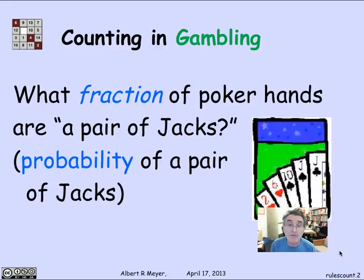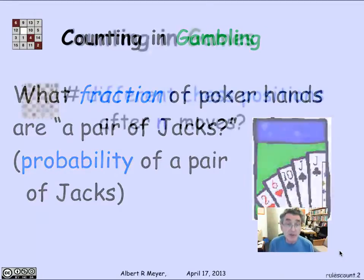So counting and gambling is one fundamental place where it really comes up, and historically that's where a lot of combinatorics begins.